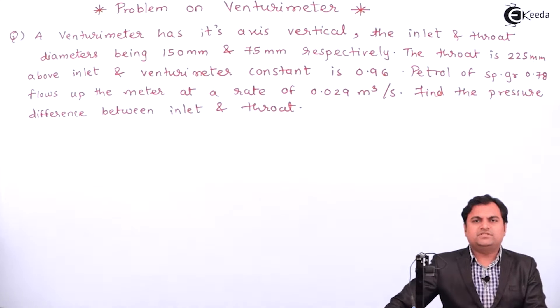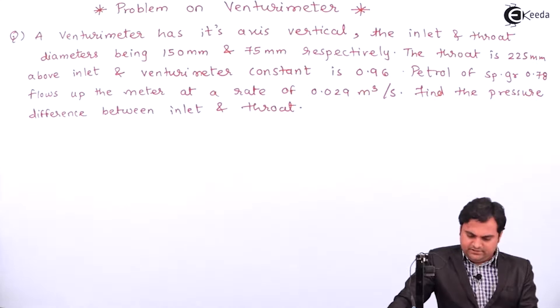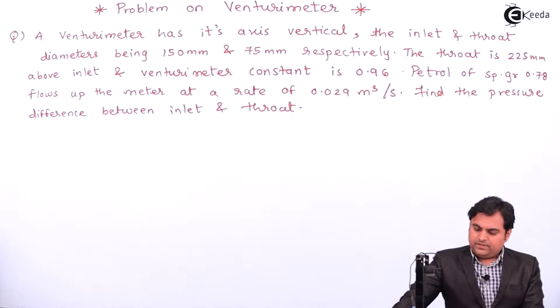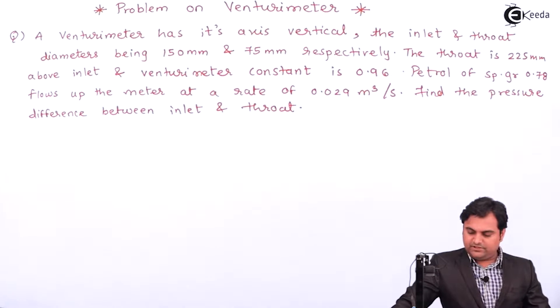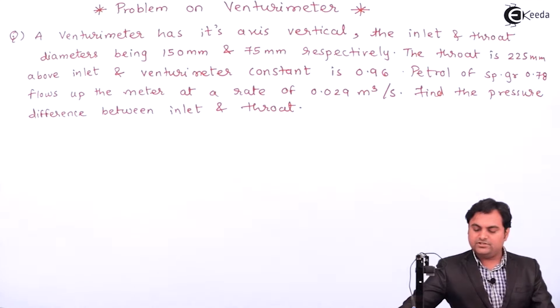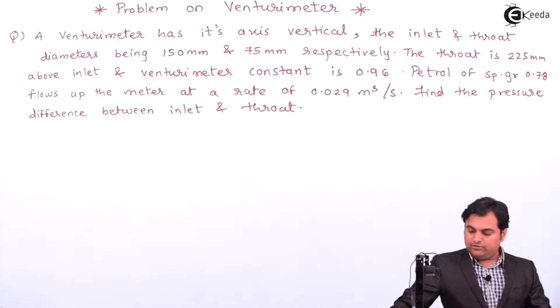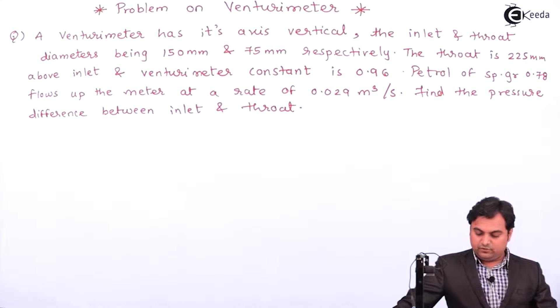Hello friends, in this video we'll see a problem on venturimeter. A venturimeter has its axis vertical, the inlet and throat diameters being 150mm and 75mm respectively. The throat is 225mm above inlet and venturimeter constant is 0.96. Petrol of specific gravity 0.78 flows up the meter at the rate of 0.029 meter cube per second.